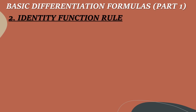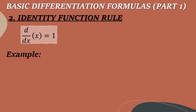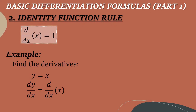The second rule is the identity function rule. The formula is: derivative of X over dx, or derivative of X with respect to X, equals 1 — wherein X is always equal to 1. For example, find the derivative of Y equals X. We replace Y with dy/dx equals, then apply the formula: derivative of X with respect to X. Since the derivative of X is 1, the answer is 1.